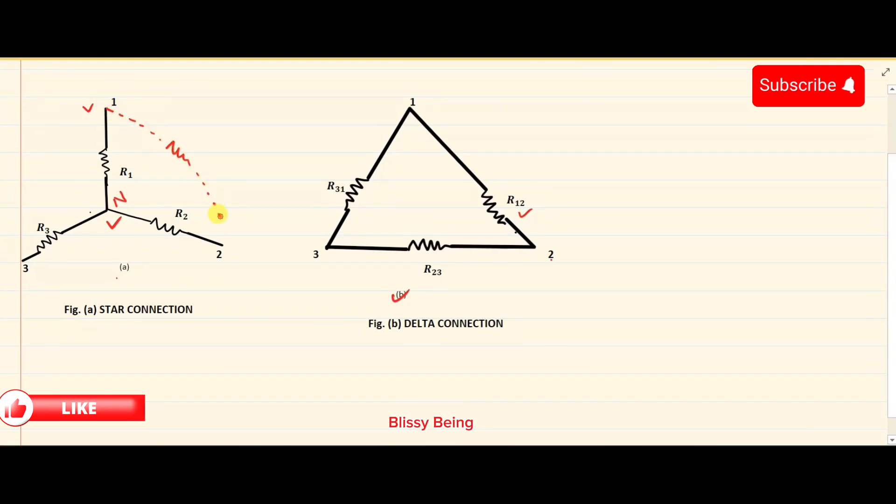Since the resistor between 1 and 2 is named as R12, R23, and R31, we have converted a star circuit into a delta just by drawing on the outer arms.